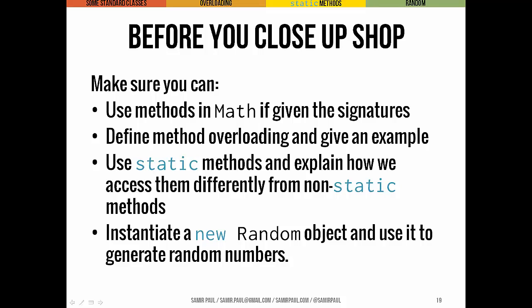Last of all, you want to be able to instantiate a new Random object and use it to generate random numbers. We have those two different methods. One gives us a random integer based on the argument that we passed in, and the other gives us a random double between zero and one. Both of these classes are going to be super useful to us, and I think you're going to enjoy using them.